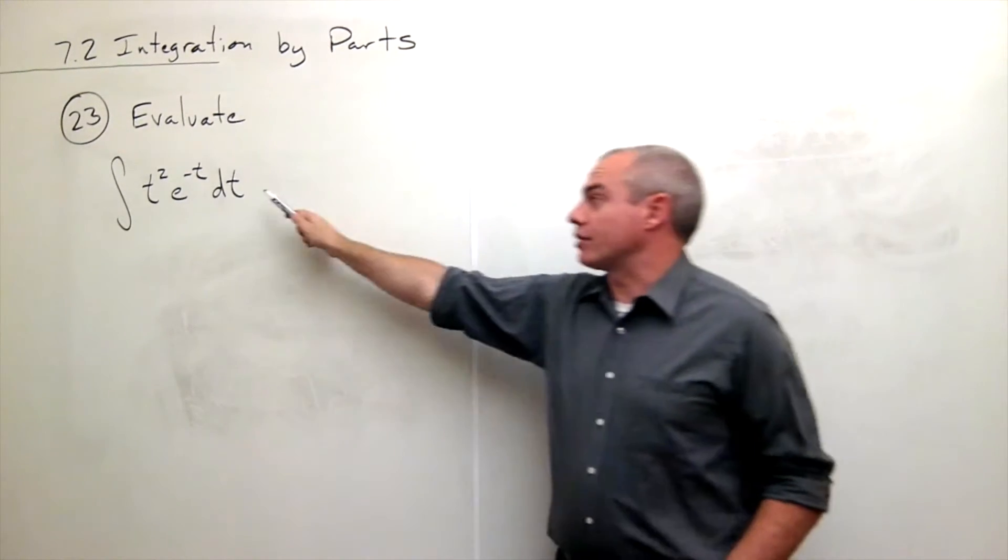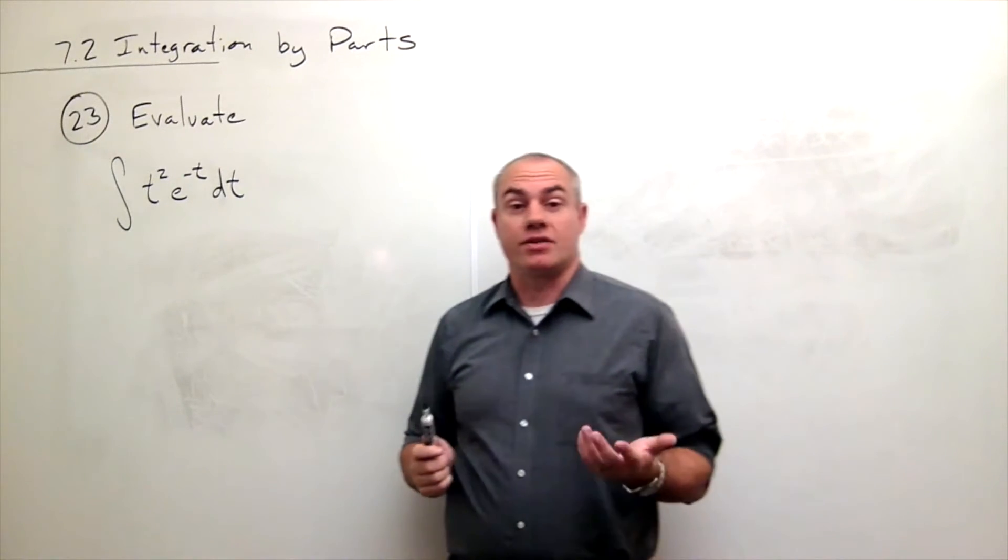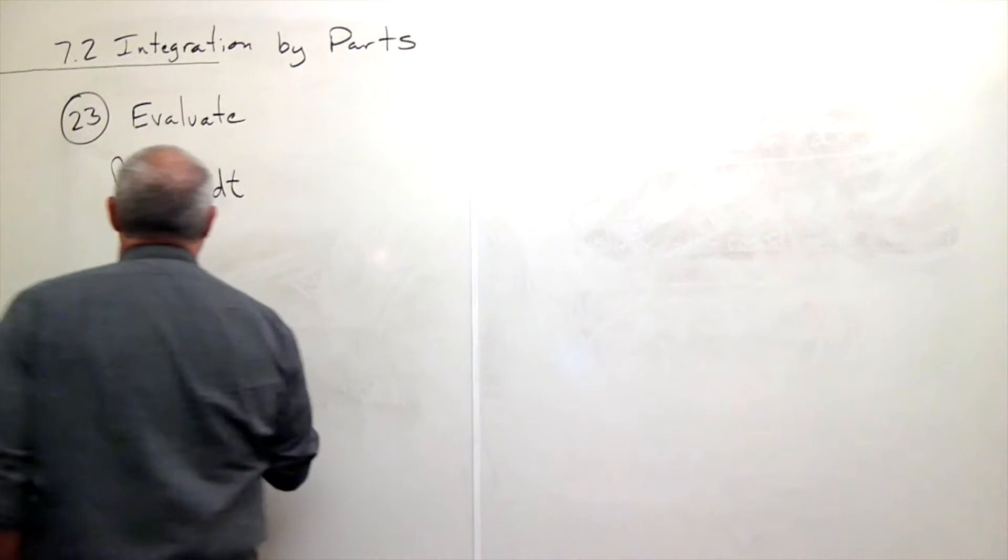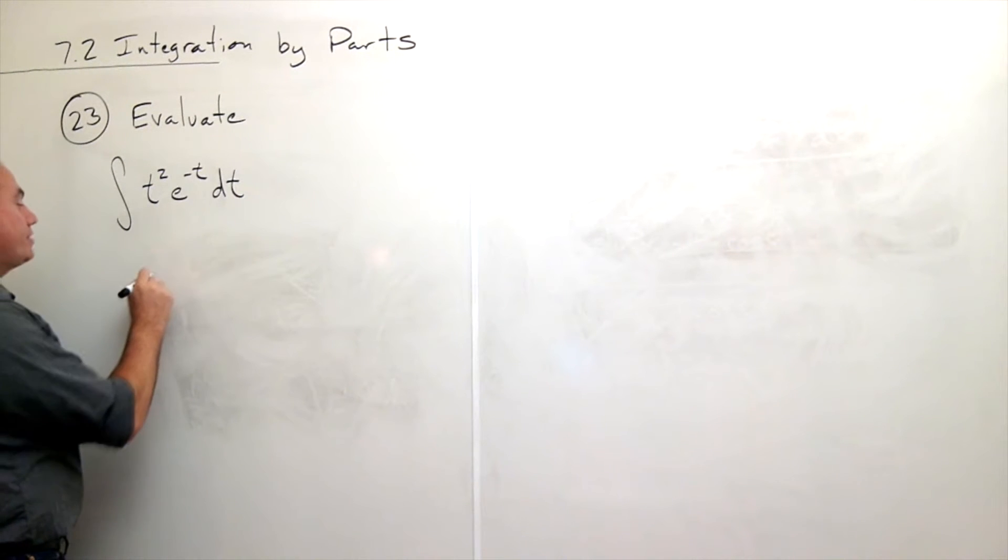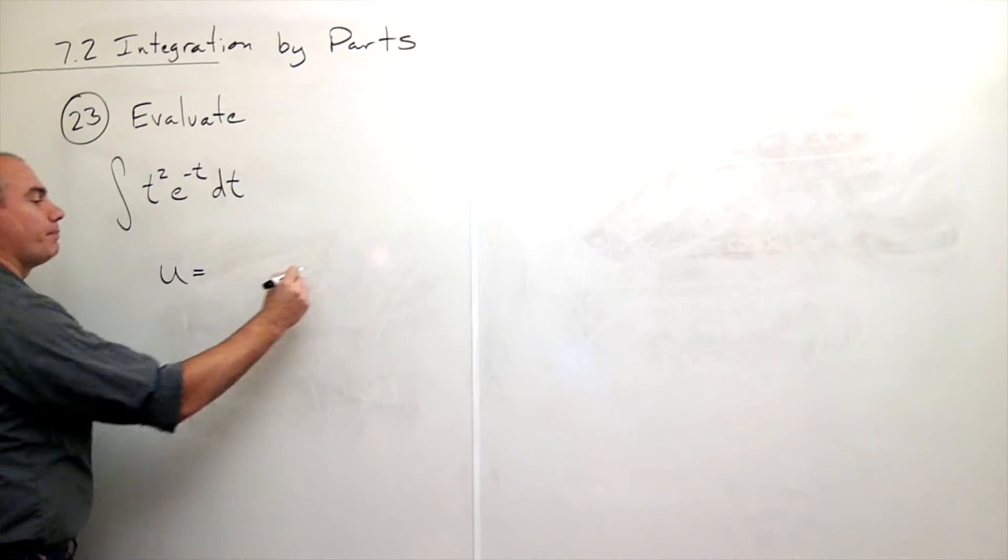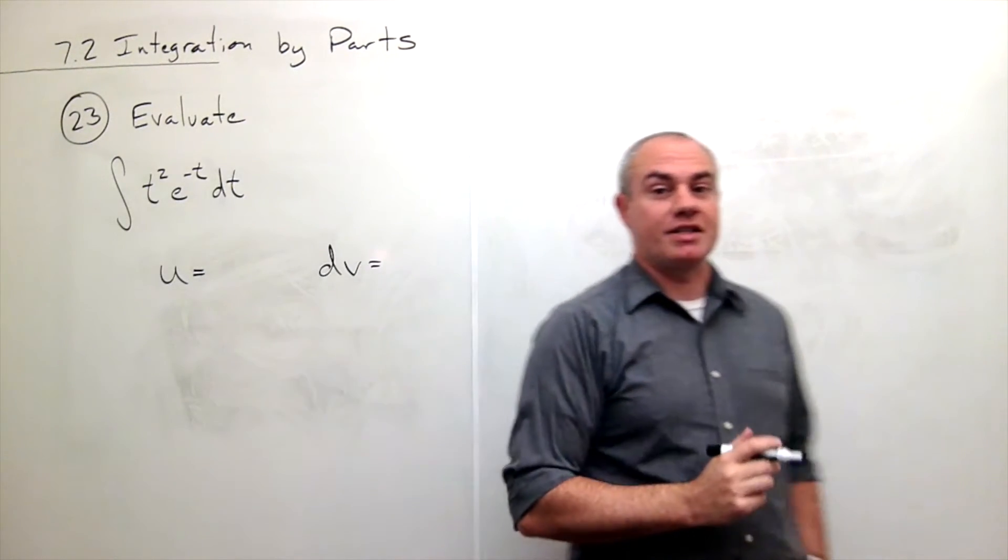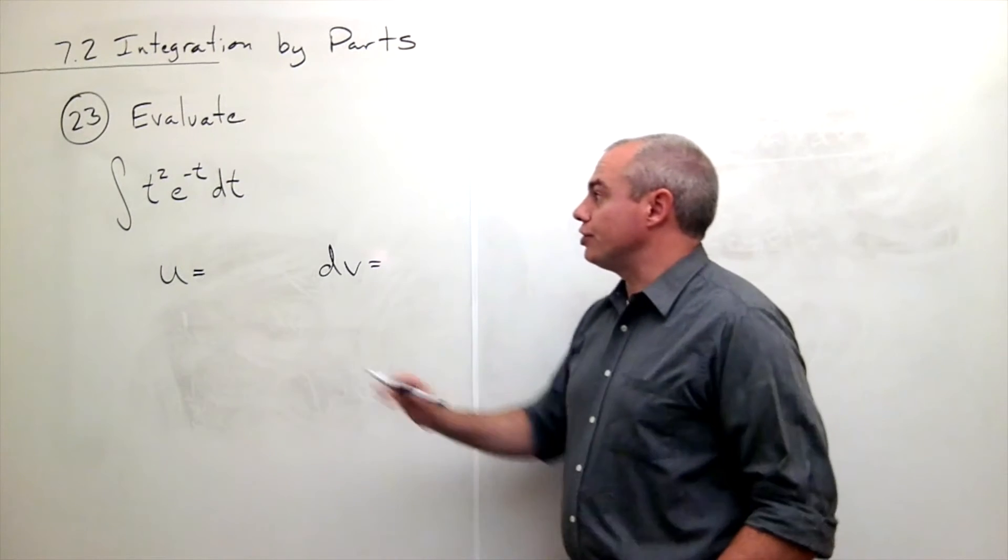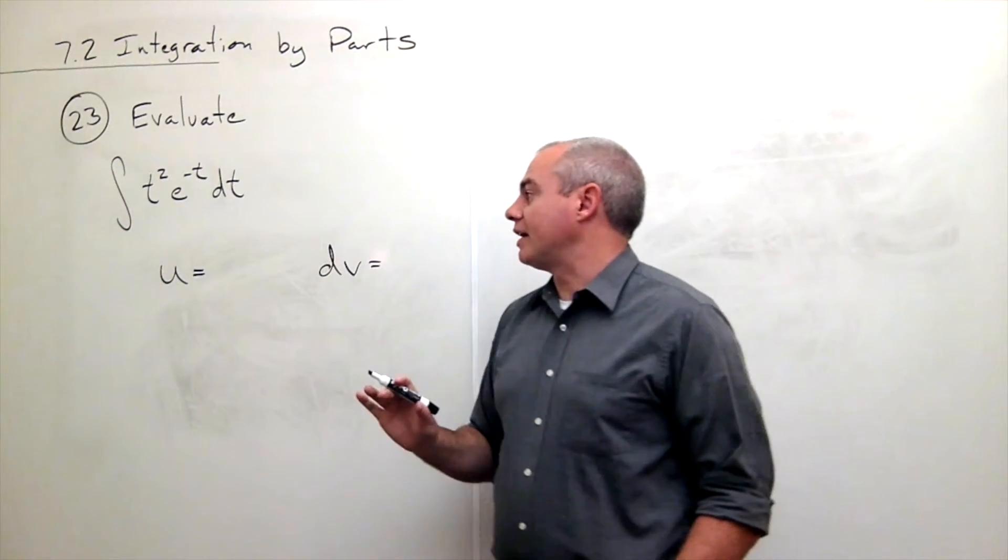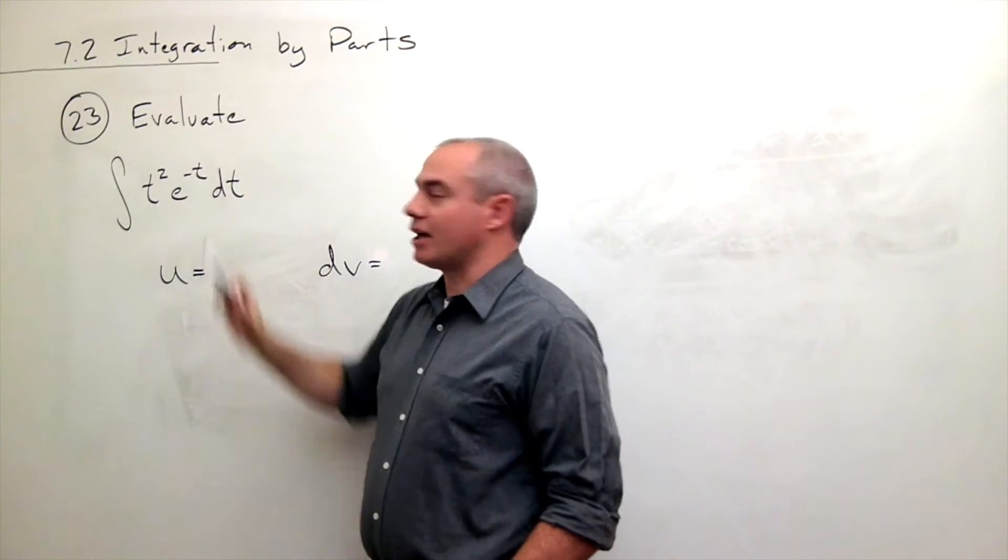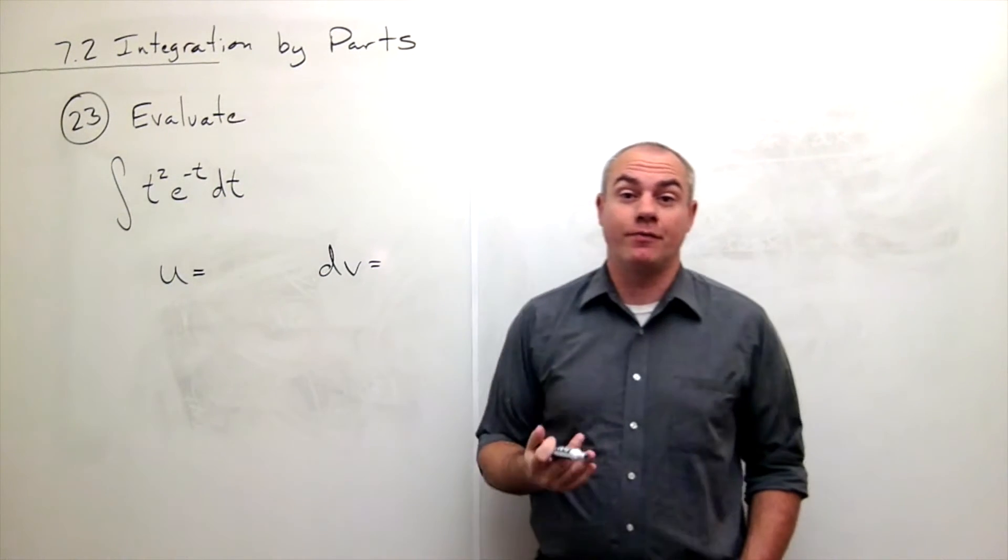To evaluate this integral we want to use integration by parts. The first step of using integration by parts is I need to break this thing up into a u piece and a dv piece. So the u is going to be the guy that I can take the derivative of. Well I've got a t squared and an e to the minus t. I could take the derivative of both of those guys.